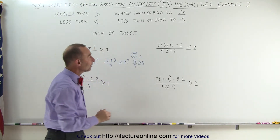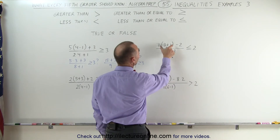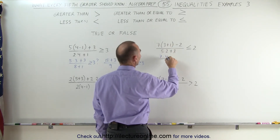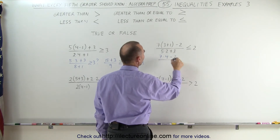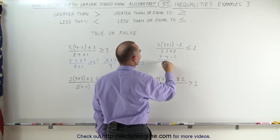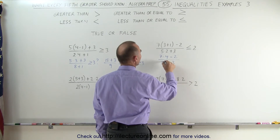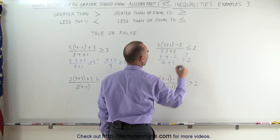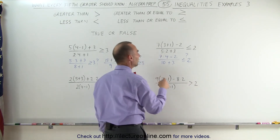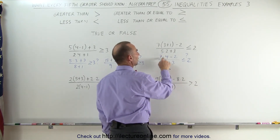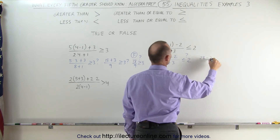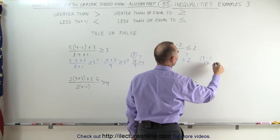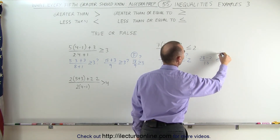Moving on to our second example. We're going to work out what's in the parentheses first. We get 7 times (3 plus 1), which is 4, minus 2, divided by 5 times 2, which is 10, plus 3. Is that less than or equal to 2? Continuing: 7 times 4 is 28, giving us 28 minus 2, divided by 10 plus 3, which is 13. Is that less than or equal to 2?